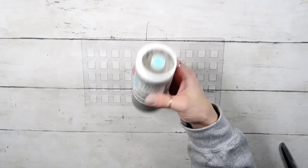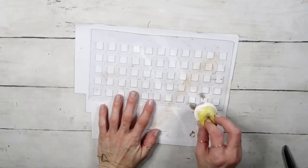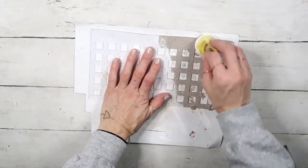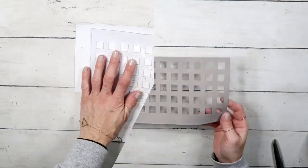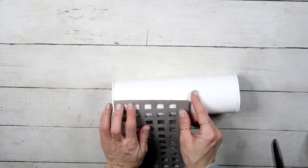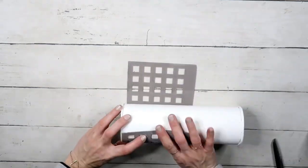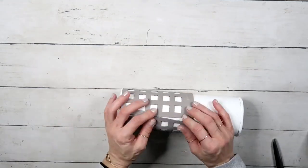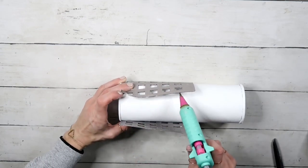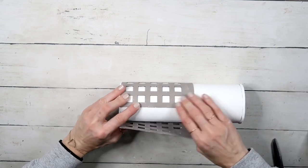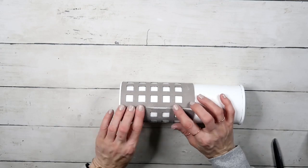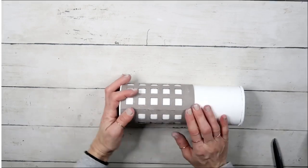After I cut it all out, I'm gonna take gray chalk paint by Martha Stewart and the same brush and just dab onto it with the same dabbing motion so it leaves some texture. Now I am going to align it flush on the bottom and use hot glue at the beginning and at the end, making sure they're not overlapping.